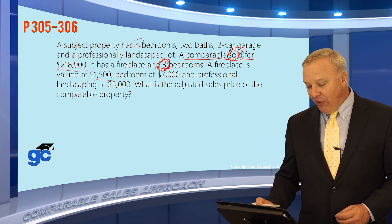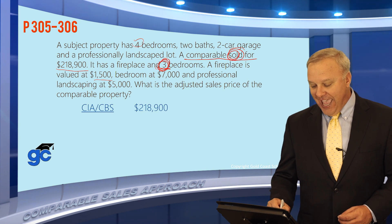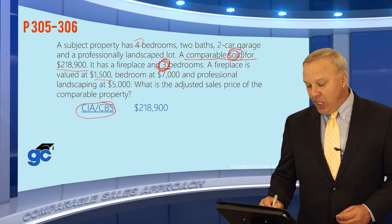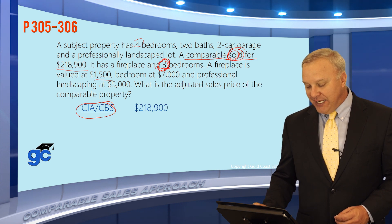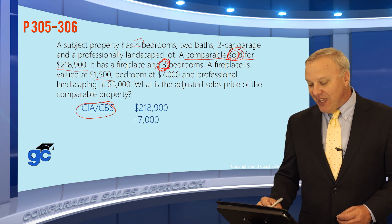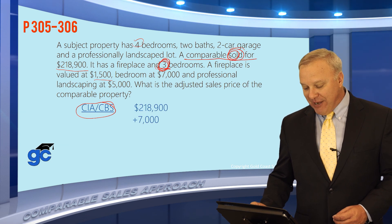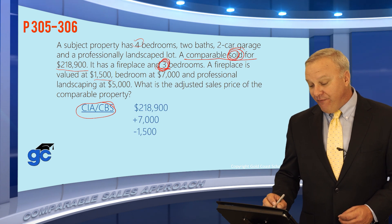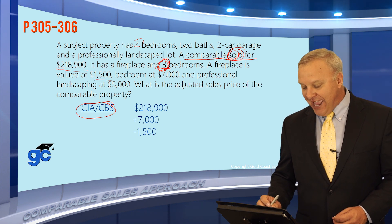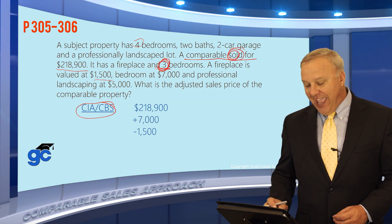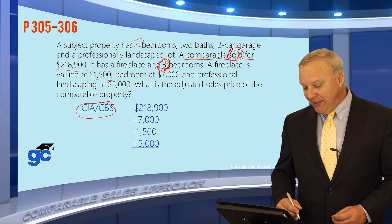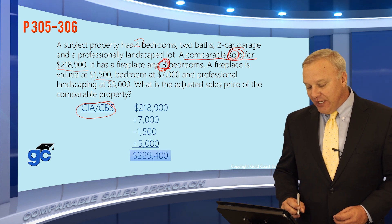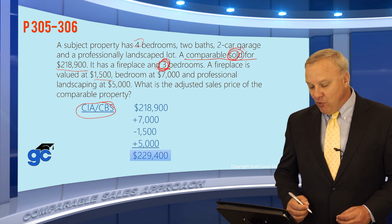Let's take a look at the math. Comp inferior, add; comp is better, subtract — CIA, CBS. The starting sales price of the comp was $218,900. We add $7,000 for the bedroom. We subtract $1,500 because of the fireplace — the subject property does not have one. And then we add $5,000 for the professionally landscaped lot. The adjusted sales price is $229,400.